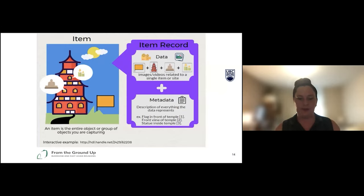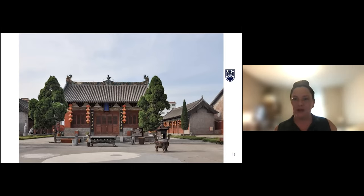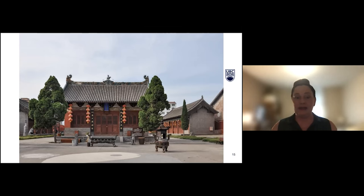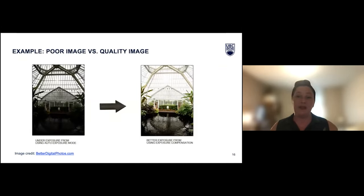Going back to those building blocks of data plus metadata, we can see how a CIRCLE item record is built. The beginning of the process is creating and selecting your data. You can have multiple files associated with one item record — the goal is just that they all logically belong together. An example might be multiple angles of a similar structure, but the quality of the data is up to the selectors. If you have duplicate images or multiple images, you want to try to select the best one. Blurry images might not actually be helpful to other people coming across this content. Not all images are going to be relevant or needed just because you have them.